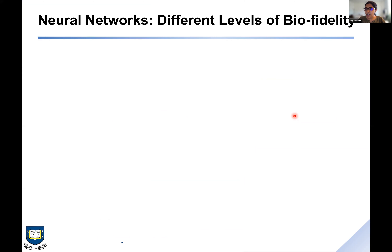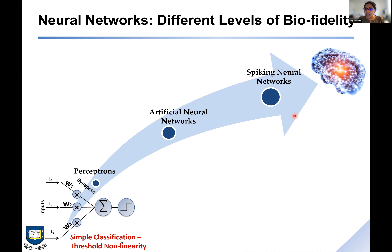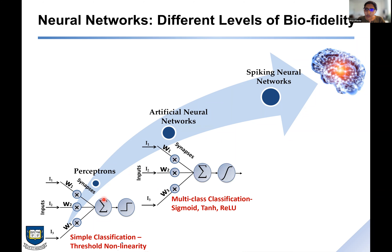Before we get into the talk, it's a good idea to give a brief history of how neural networks have evolved. At each stage of evolution there have been interesting levels of biofidelity between neural networks and the brain. In the 1940s when perceptrons came into being, the idea was that inputs pass through a weighted summation operation followed by a non-linearity — specifically a binary threshold function — and you can do simple classification tasks with such perceptron-based networks.